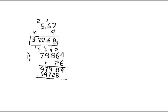Adding the partial products: 4, 6, carry 1. 1 plus 2 is 3, plus 1 is 4. 9 plus 7 is 16 — carry 1. 7 plus 9 is 16, plus 1 is 17 — carry 1. 4 plus 5 is 9, plus 1 is 10 — write 0, carry 1. 1 plus 1 is 2. The answer is 2,076,464.